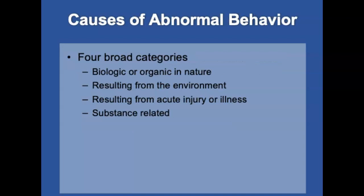When it comes to psychiatric emergencies, there are four broad categories. Abnormal behavior typically results from a complex interaction of biologic or organic causes, developmental factors, psychologic stressors, emotional stimuli, or social-cultural influences. These causes can be classified into four broad categories: causes that are biologic or organic in nature, causes resulting from the person's environment, causes resulting from an acute injury or illness, or causes that are substance-related.